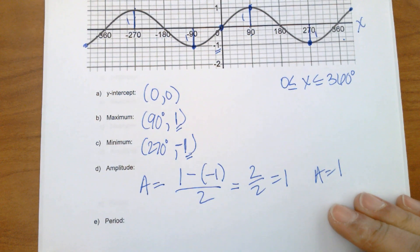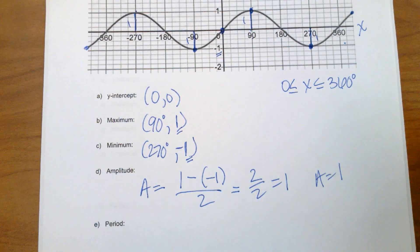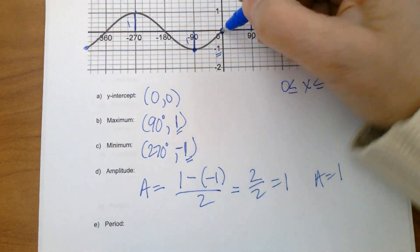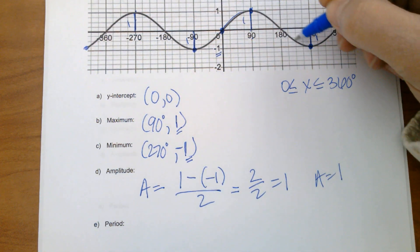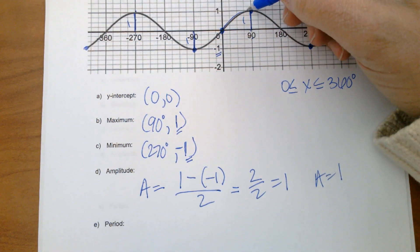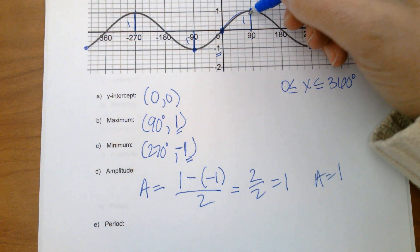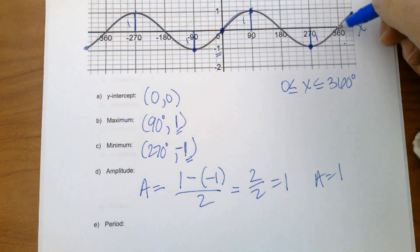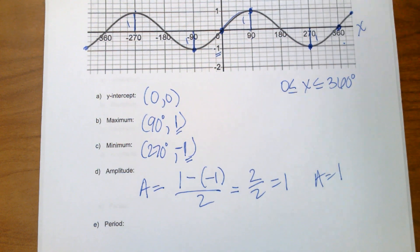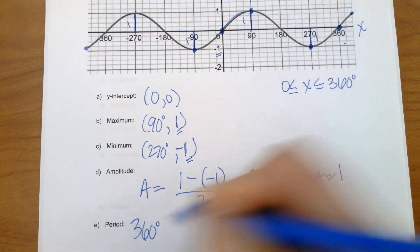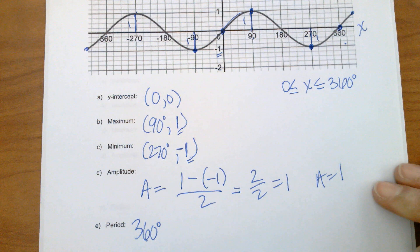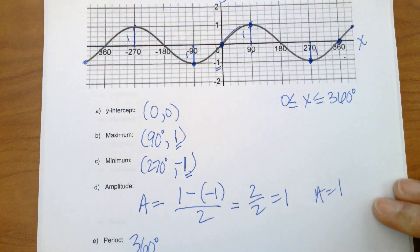And our period — how long does it take to do one cycle? Starting here, we hit a maximum, then a minimum, and back to where we started — that is 360 degrees. So that's your standard sine curve.